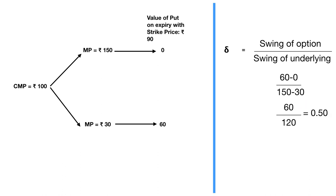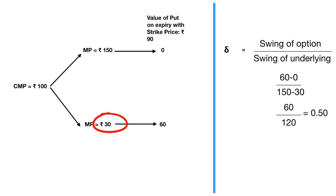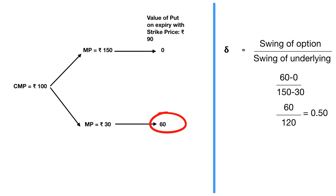Similarly, let's take an example for a put. Let's say there's a stock whose current market price is 100, which can go up to 150 and go down to 30. The value of a put with a strike price of 90 when the market price is 150 will obviously be zero because it will be out of the money. And the value of the put with a strike price of 90 when the market price is 30 will obviously be 60. So the put can swing from 60 to zero while the stock swings from 150 to 30. Therefore the option delta is 60 minus zero upon 150 minus 30, which gives us an option delta of 0.5.